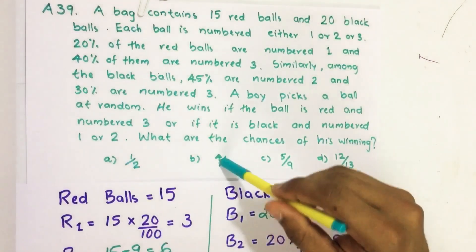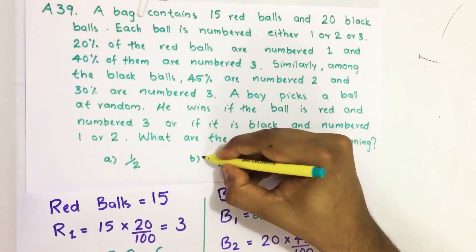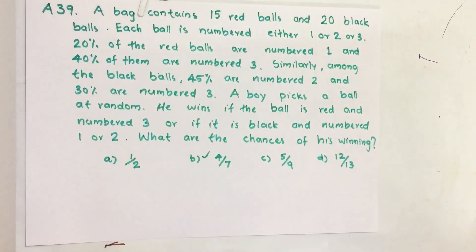Our answer is option B, 4 by 7. If you have any suggestions, please do comment. Don't forget to like, share, and subscribe to our channel. Keep supporting and loving us. Jai Hind. Thank you.